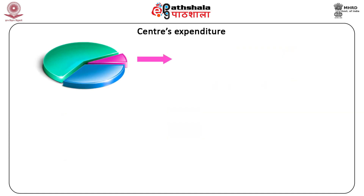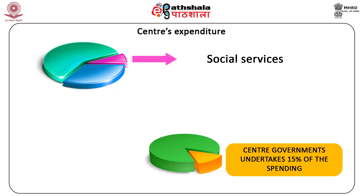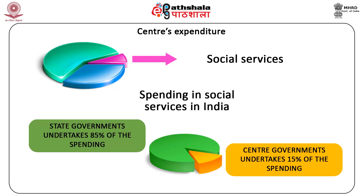Expenditures by the government on social and economic services are crucial for fulfilling the basic needs of people in developing countries. However, the share of the centre's expenditures on social services is low. Given the division of responsibilities between the centre and the states in India, on an average, about 85% of the spending in social services in India is undertaken by the state governments. It is the responsibility of the states rather than the centre to provide social services that matter more for human development.